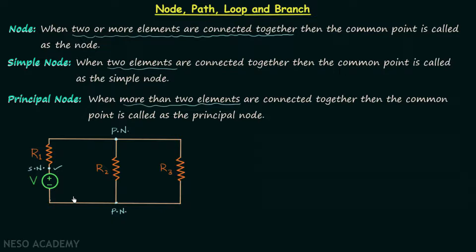Similarly, we can have another path: starting from this simple node, moving through R1, stopping at this principal node, then moving through R2, and stopping at this principal node. So I hope you now understand what a path is in a network. Now we will move on to the definition of a loop.